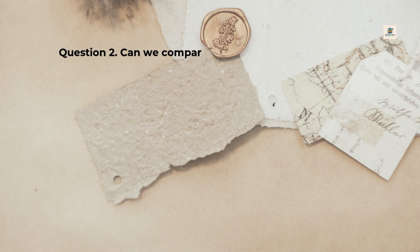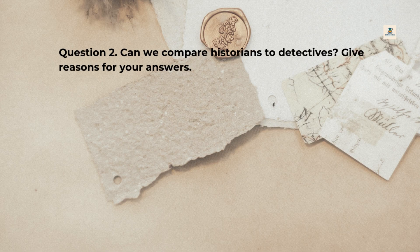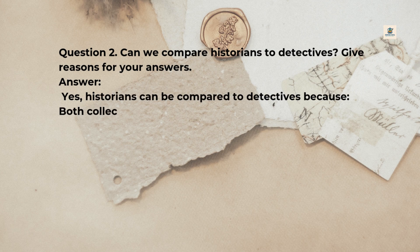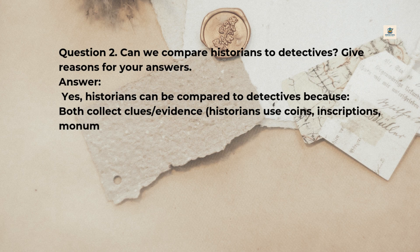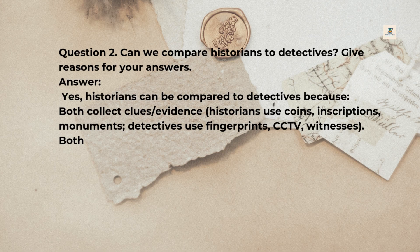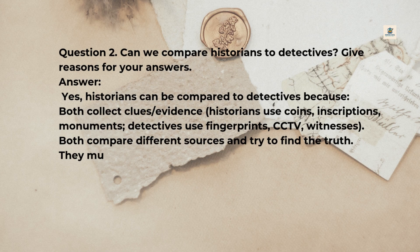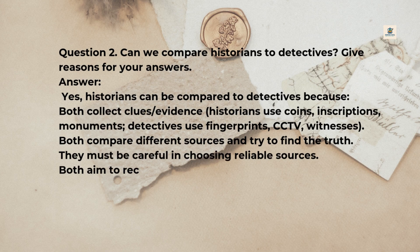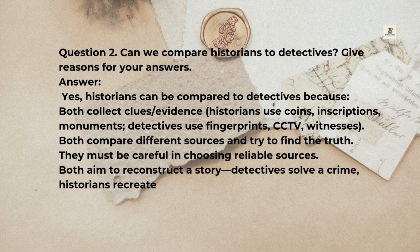Question 2: Can we compare historians to detectives? Give reasons for your answer. Answer: Yes. Historians can be compared to detectives because both collect clues and evidence. Historians use coins, inscriptions, and monuments; detectives use fingerprints, CCTV, and witnesses. Both compare different sources and try to find the truth, and must be careful in choosing reliable sources. Both aim to reconstruct a story — detectives solve a crime, historians recreate the past.